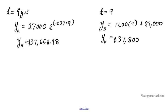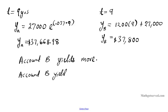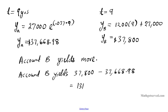So which one yields more? Clearly account B yields more. By how much? Account B yields $37,800 minus $37,668.98. So we subtract these two amounts from each other: 37,800 minus 37,668.98, and we get $131.02 — account B yields $131.02 more than account A.